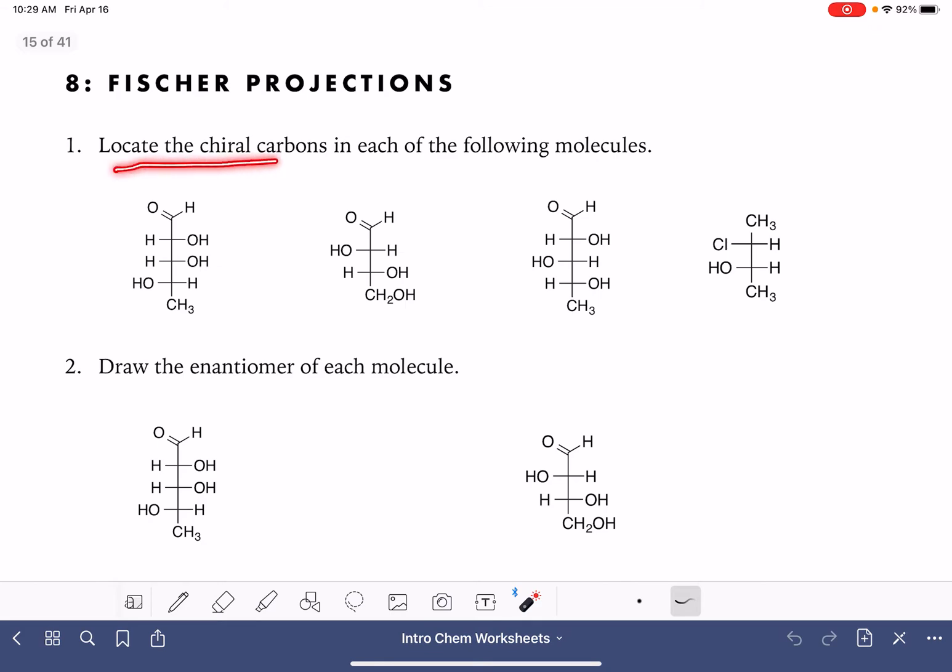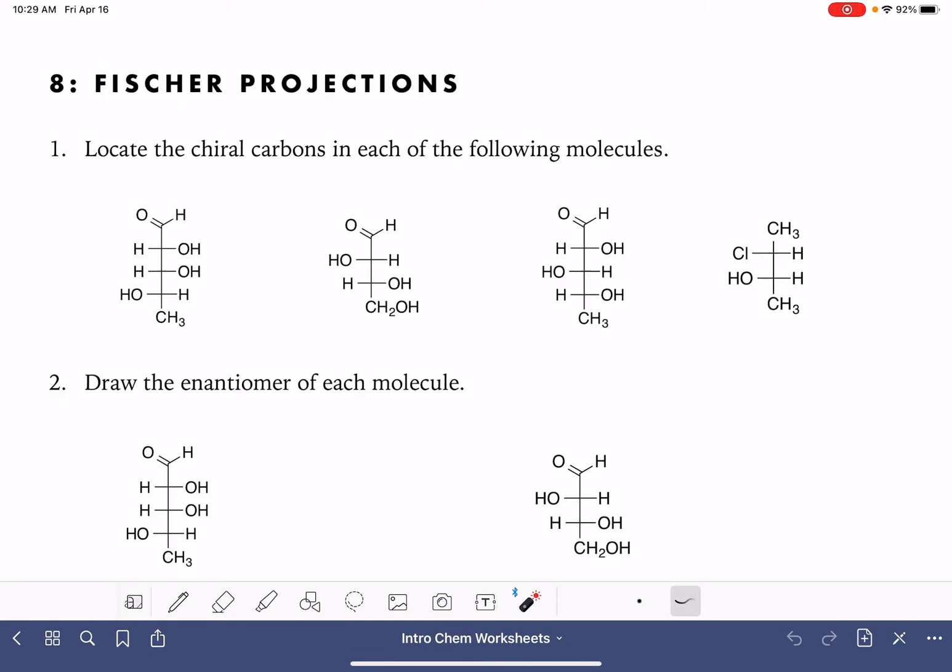The first problem, we just want to be locating the chiral carbon or the chirality center in each one of the following molecules. As a reminder, a chiral carbon or a chirality center is a carbon atom that has four single bonds, can't have any double bonds, and the four single bonds are each to four completely unique things, like four totally different things in the molecule.